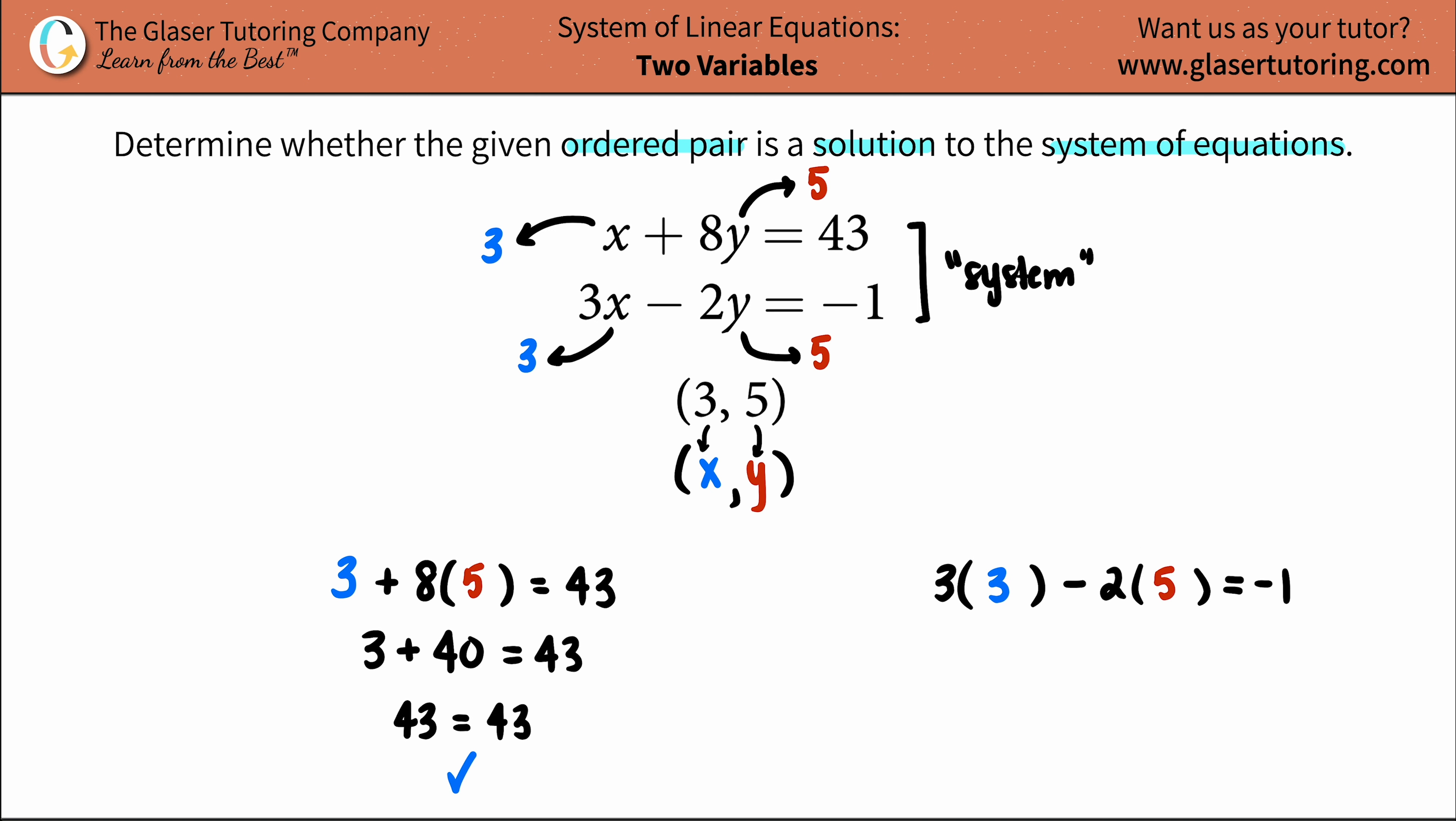Now, let's just do the other one. 3 times 3 is 9, minus 2 times 5 is 10, and hopefully this turns out to be a negative 1. And yeah, it does. 9 minus 10 is a negative 1.